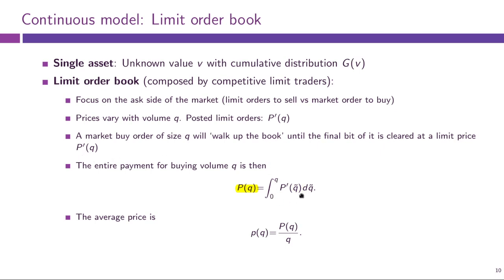This integral is the continuous analog of summing up P'(1), P'(2), P'(3), and so on. As you can see, the marginal price P'(Q) is exactly the first derivative of the total payment P(Q) for an order of size Q — it is the additional price from one more unit. You can also compute the average price at which your trade executes, small p(Q), by dividing the total payment P(Q) by the trade size Q.